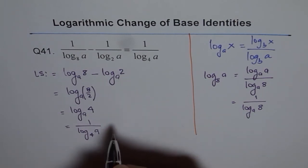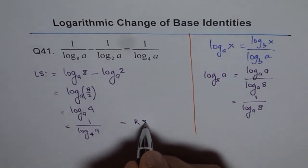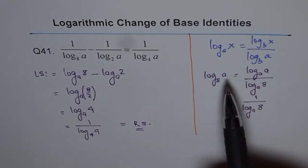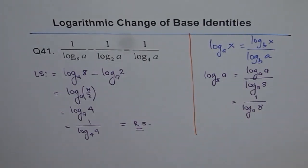That is our right side, and this is how we apply the change of base formula to do these reciprocal kind of identities. I hope you appreciate it. Put your comments and share them with your friends. We'll move on to some more similar questions. Thank you.